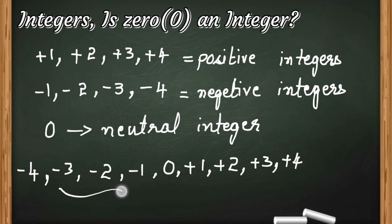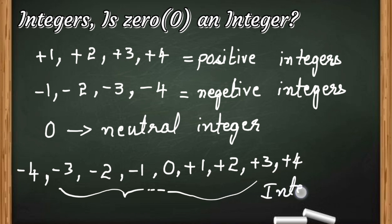All positive numbers along with 0 are greater than negative integers. Their value is greater than negative integers. So, 0 is greater than minus 1, minus 2, minus 3, and minus 4.